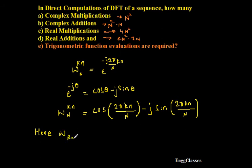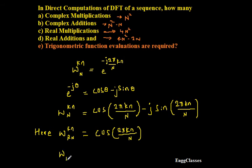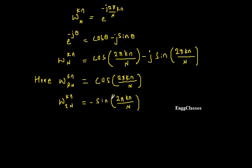The real part of W_N to the power kn — indicated as W_r_N to the power kn — is cosine of 2πkn divided by capital N. The imaginary part, indicated as W_i_N to the power kn, is the negative of sine of 2πkn divided by capital N.